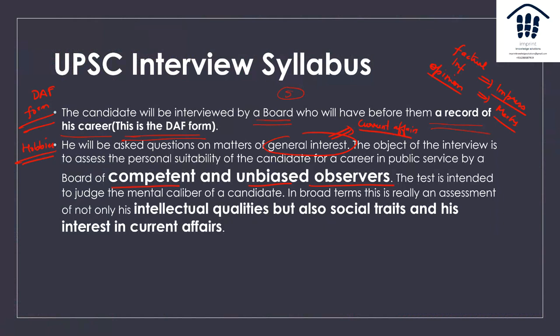The test is intended to judge the mental caliber of a candidate — an assessment of intellectual qualities, social traits, and interest in public current affairs. For example, KJ Alphonse, who was from the Kerala cadre and famous for the DDA, bringing down illegal constructions in Delhi — during his interview, when there was a strong viewpoint that alcohol should be banned, he actually defended it. Your opinion matters, and the way you argue for it matters. Taking a side doesn't guarantee high marks.